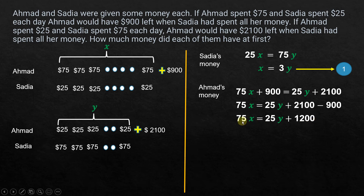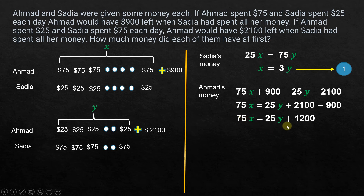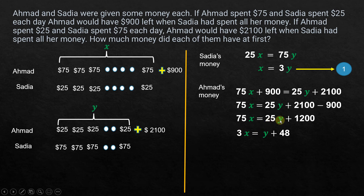All these numbers are divisible by 25, so we can simplify. Dividing both sides by 25: 75 ÷ 25 = 3, so we get 3X; 25 ÷ 25 = 1, so we get Y; and 1200 ÷ 25 = 48. This gives us our second equation: 3X = Y + 48.